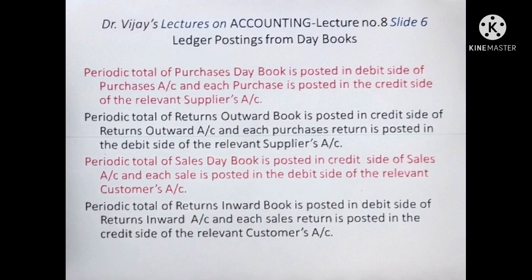Regarding credit Sales: in the Sales Day Book, only credit sales of goods are recorded. The periodic total of the Sales Day Book is posted on the credit side of Sales Account — the monthly total of January credit sales is shown in the credit side of Sales Account (instead of posting each sale separately, only the total is posted, saving much labor). Each individual sale is posted on the debit side of the particular customer's account, as that customer is a receiver. For Returns Inwards (Sales Returns), the periodic total is debited to Returns Inwards Account, and for each sales return, the relevant customer is credited.